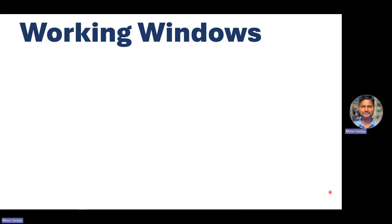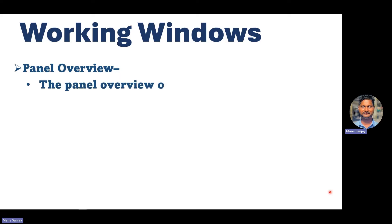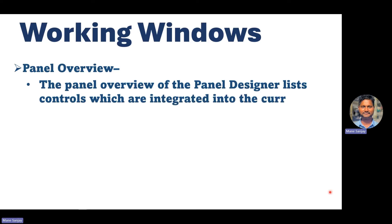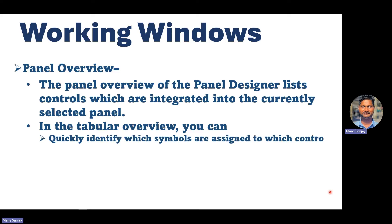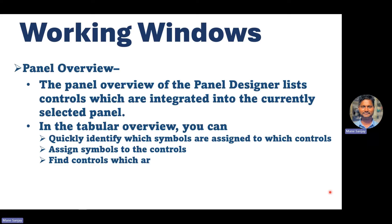The next working window is the Panel Overview. The panel overview lists the controls which are integrated into the currently selected panel. In the tabular overview, you can quickly identify which symbols are assigned to which control, assign symbols to controls, and find controls which are hidden or located outside the panel.